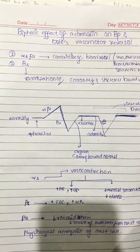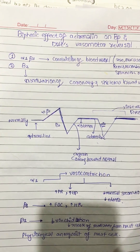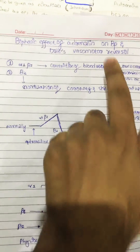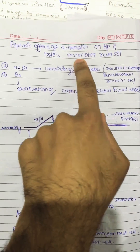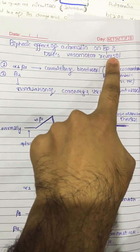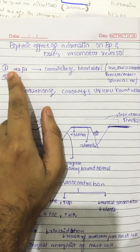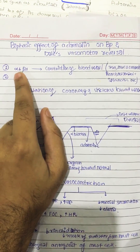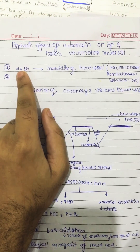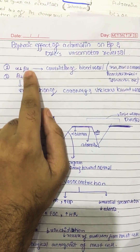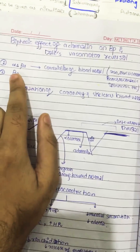Today we are going to cover the biphasic effect of adrenaline on blood pressure and Dale's vasomotor reversal. When we administer adrenaline, it affects two kinds of receptors: alpha-1, beta-1, and beta-2.